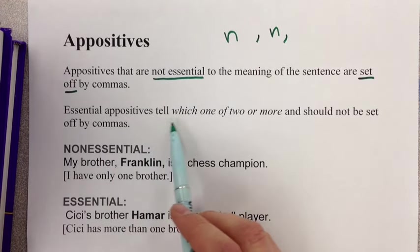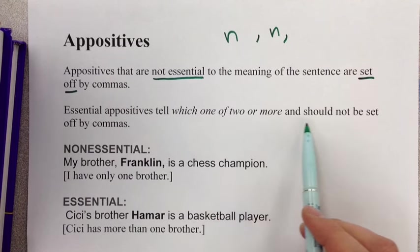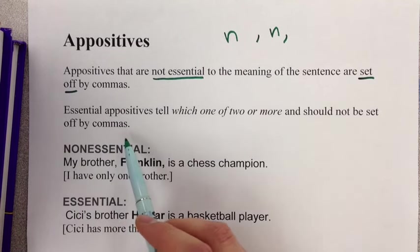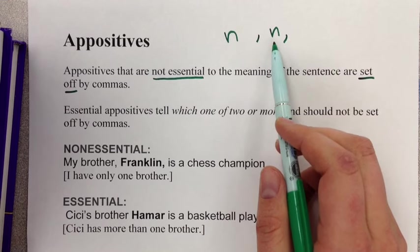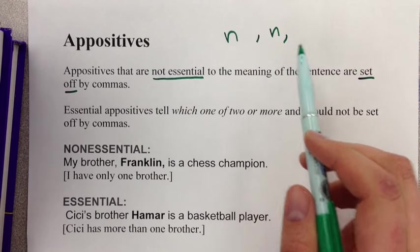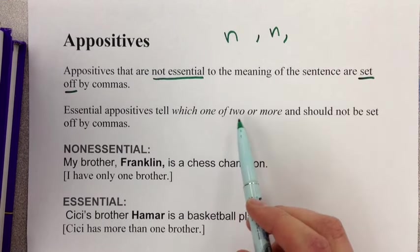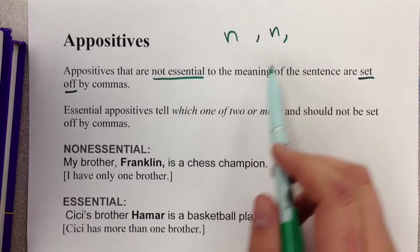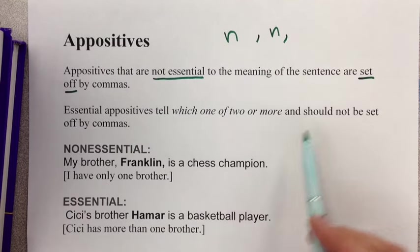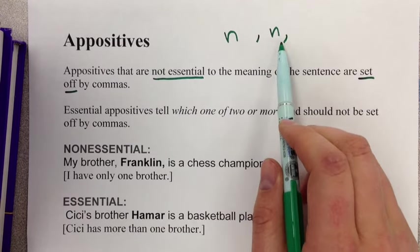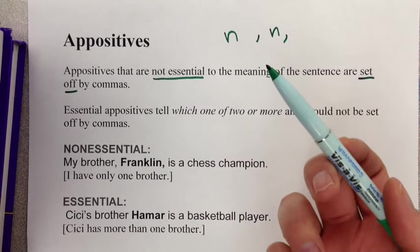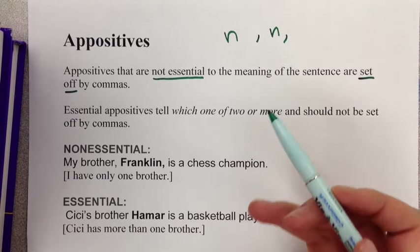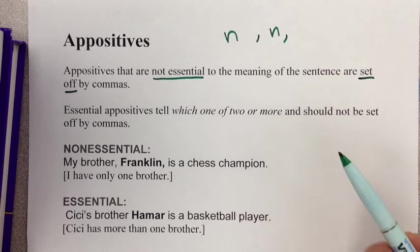Essential appositives tell which one of two or more things is being discussed and should not be set off by commas. If the second noun clarifies which one of two or more things is being spoken about, you do not use commas because it's essential. Without that information, the sentence would no longer make sense or we would be very confused.